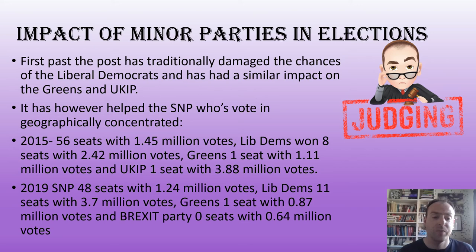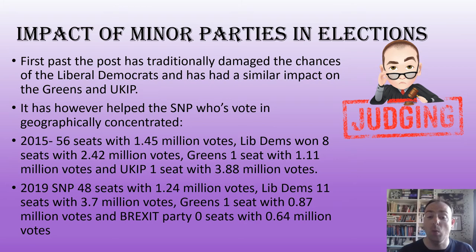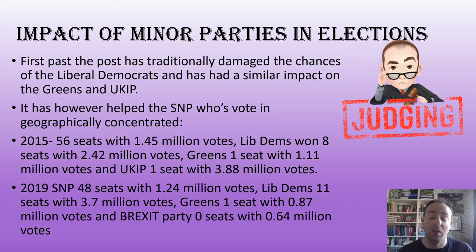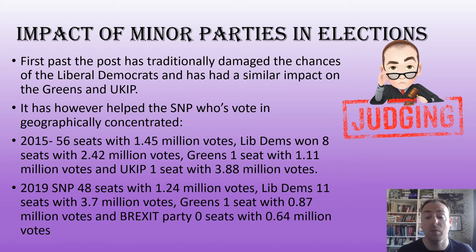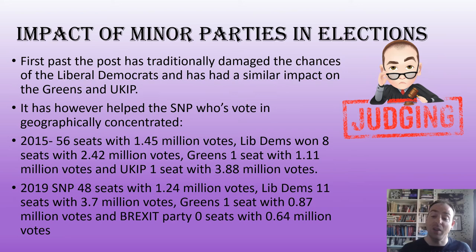In 2019 we see a similar pattern. The SNP won 48 seats with 1.24 million votes. The Liberal Democrats won 11 seats but needed 3.7 million votes to achieve that. The Greens got 1 seat with 0.86 million votes. The Brexit Party received 0.64 million votes and won no seats at all. So the importance of minor parties doesn't necessarily translate into seats — it does for the SNP where the electoral system suits them, but not for others like the Greens and UKIP, though their votes can still have an impact and they can hold a balance of power.